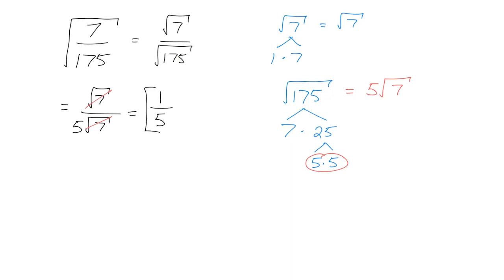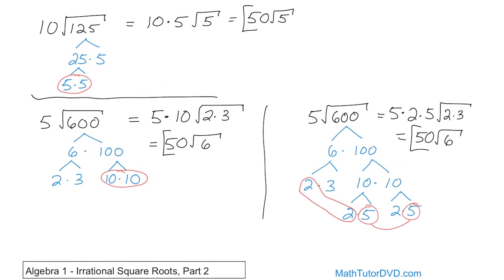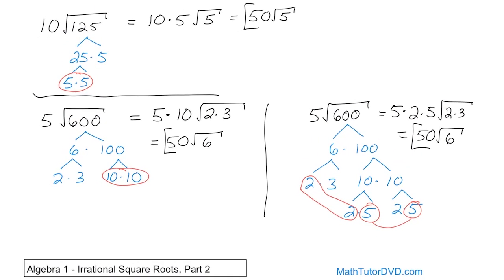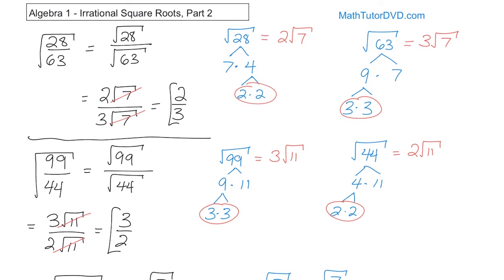This process doesn't require tons of additional problems. Once you get the hang of it — if you have something out in front, you handle the radical, pull out what you need, and multiply in front to get the final answer. With fractions, you handle each one separately. If you have a cancellation, great. If not, you leave it alone. So make sure you understand this. So far we've done square roots with numbers. In the next section, we're going to start involving variables. Follow me there, and we'll start handling variables with square roots in algebra.